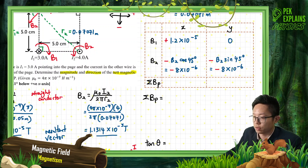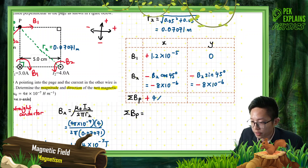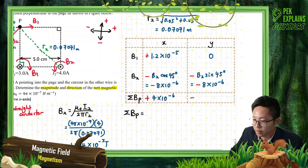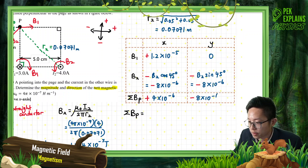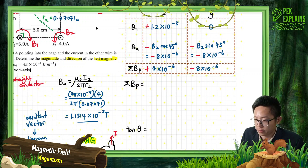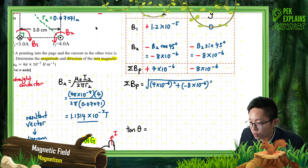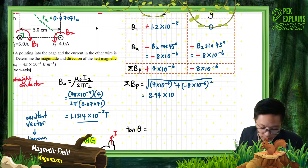Now total up the X and Y components. Total X = 1.2 × 10⁻⁵ − 8 × 10⁻⁶ = 4 × 10⁻⁶ (positive). Total Y = −8 × 10⁻⁶ (negative). Using the Pythagorean theorem: resultant = √((4 × 10⁻⁶)² + (8 × 10⁻⁶)²) = 8.94 × 10⁻⁶ Tesla.